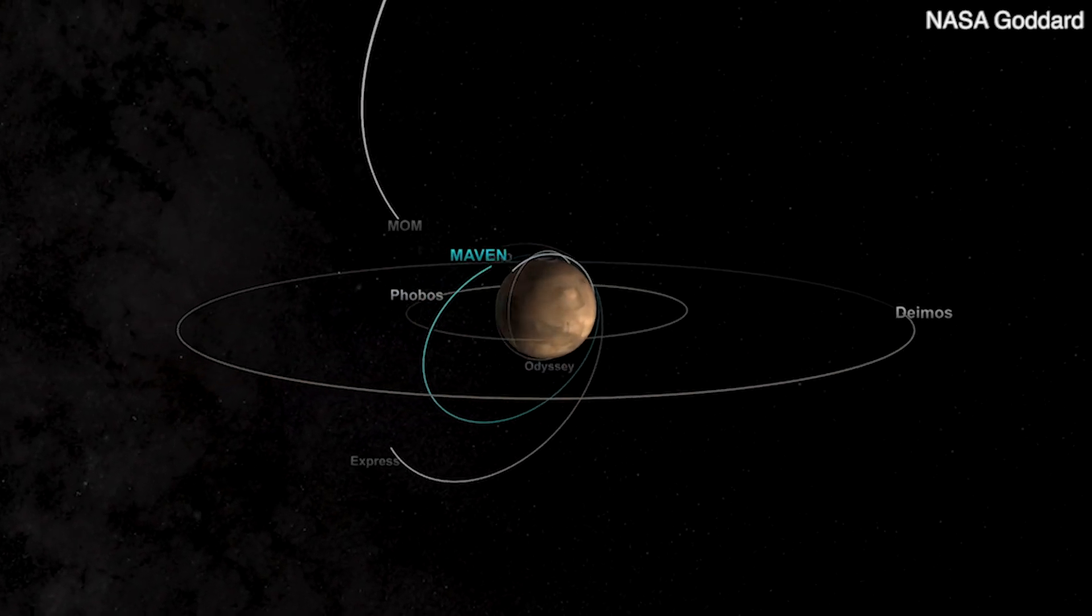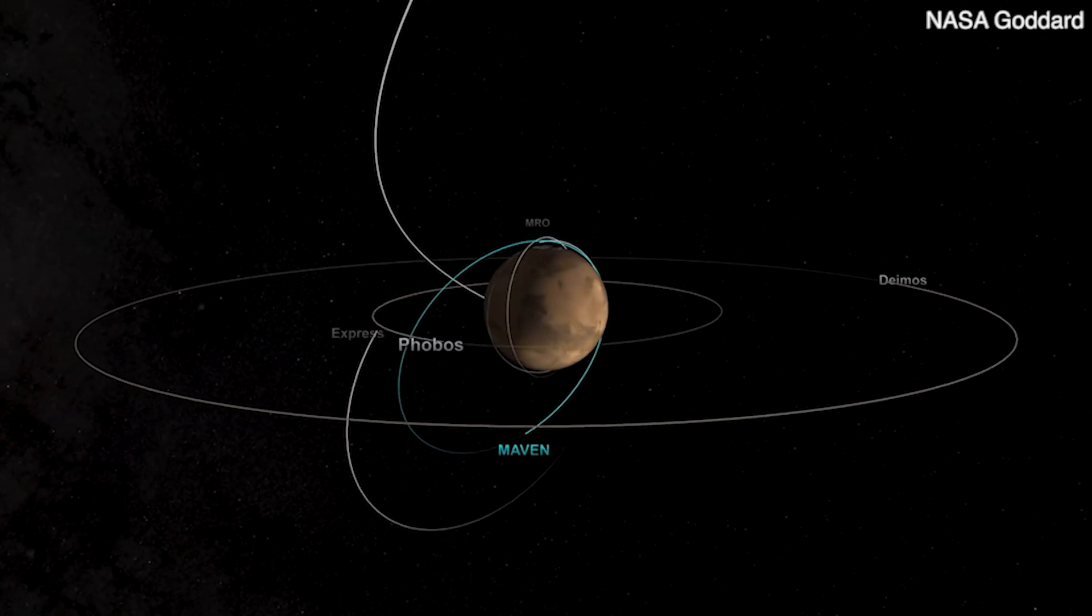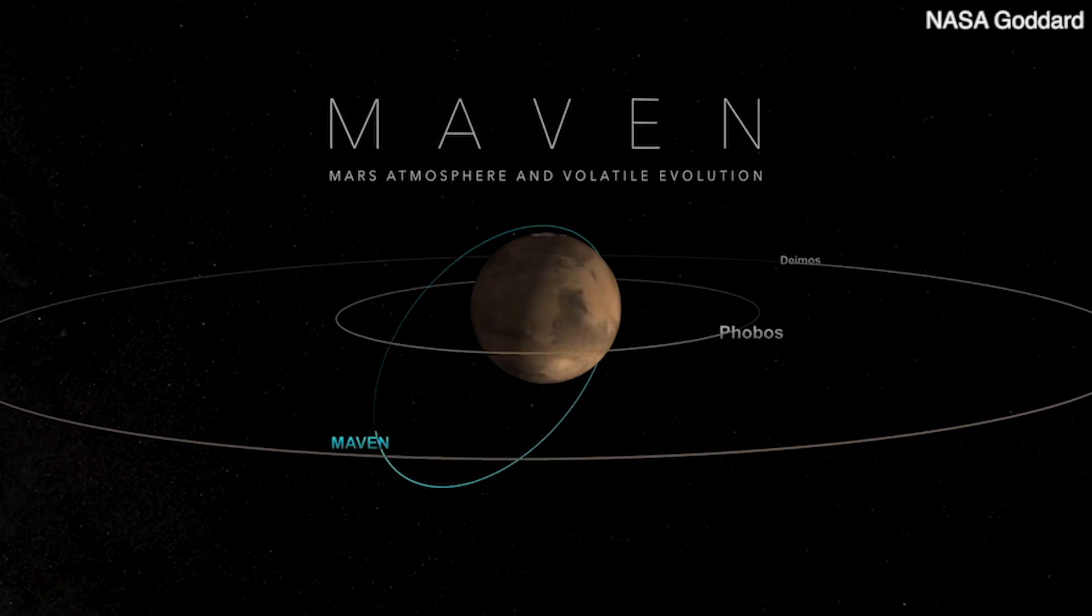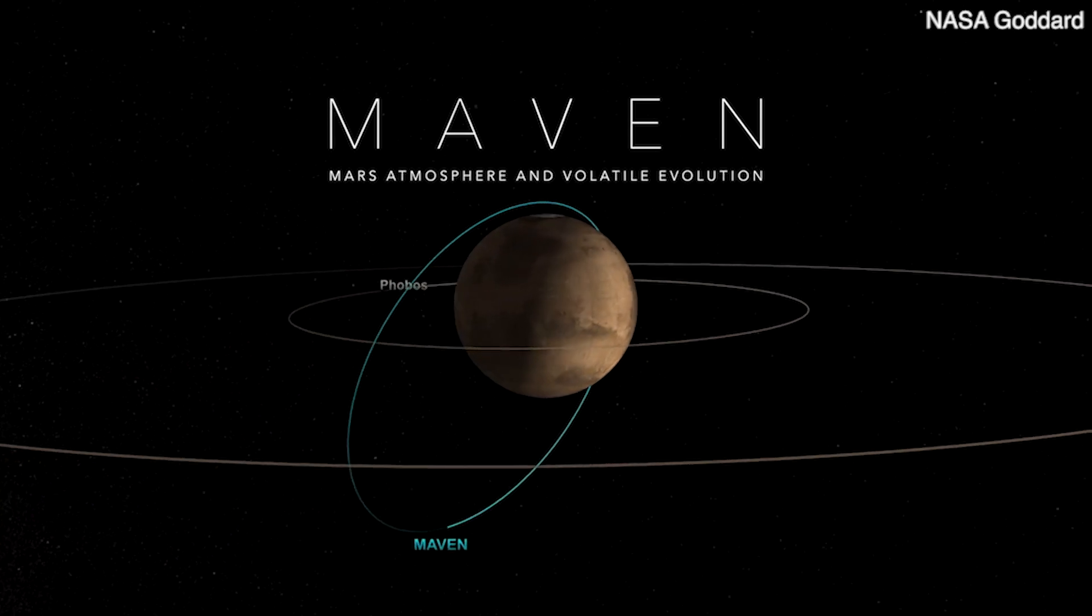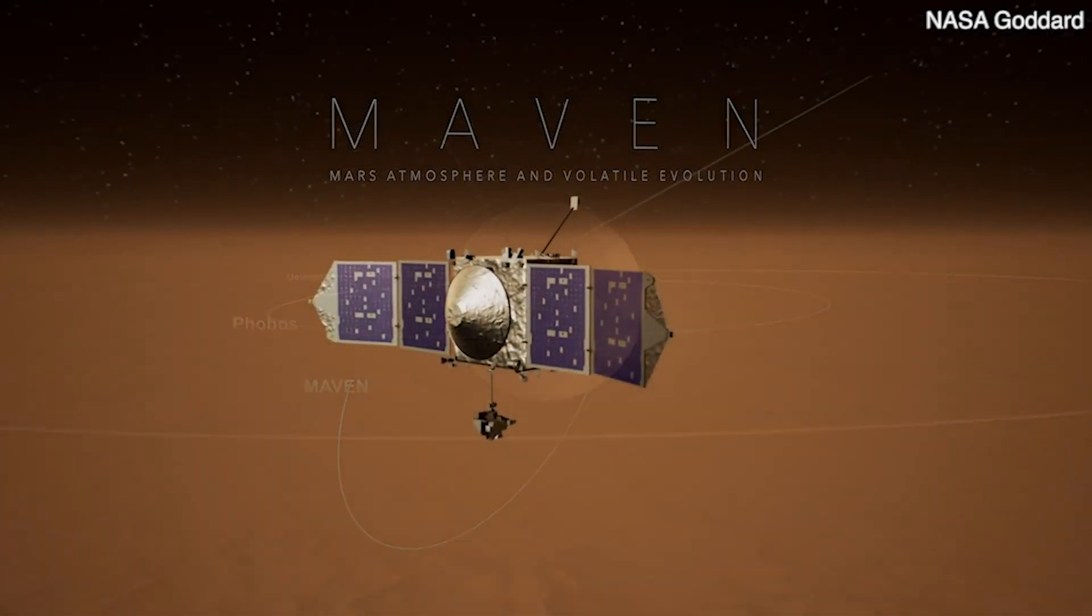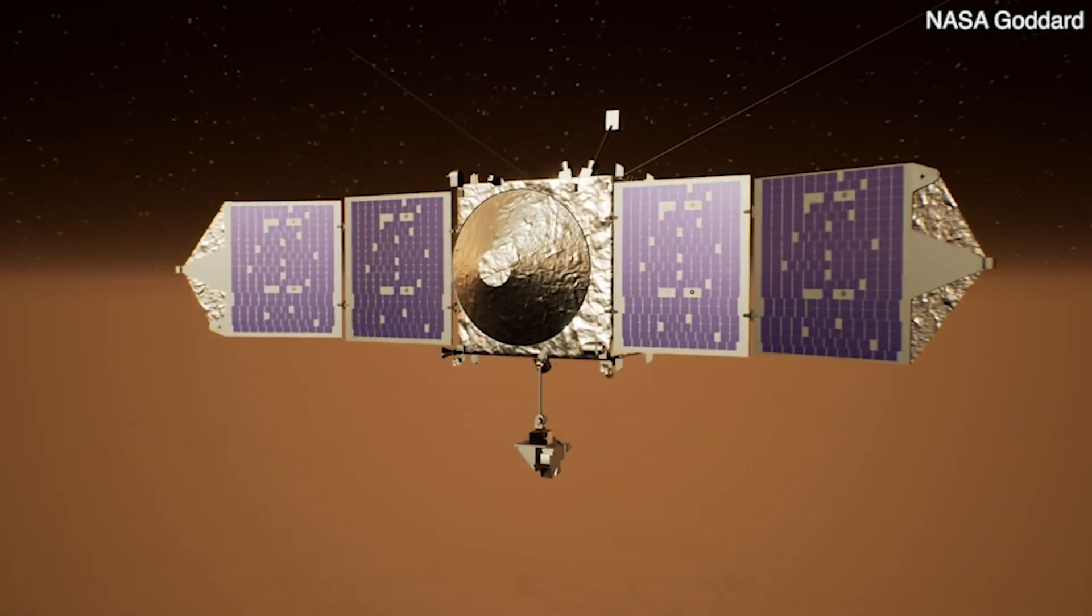MAVEN is a spacecraft that's orbiting Mars. It's been there since 2014. MAVEN in this case is an acronym.